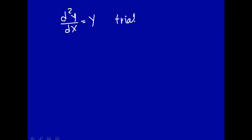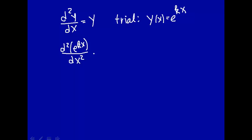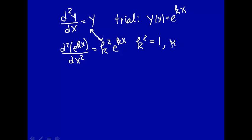Let's look for a trial solution. Do we know a function that when you take the second derivative, you get the function back again? The answer is yes — that's an exponential: y of x equals e to the kx, where k is some constant to be determined. So let's put that value of y in. The second derivative of e to the kx with respect to x squared equals k squared e to the kx. So this implies that k squared is equal to 1, or that k is equal to plus or minus 1.